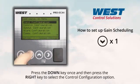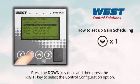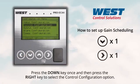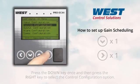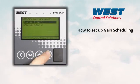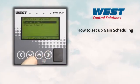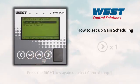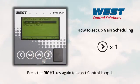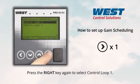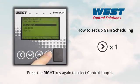Press the down key once to highlight control configuration, then press the right key to enter. Press the right key again to select control loop one.